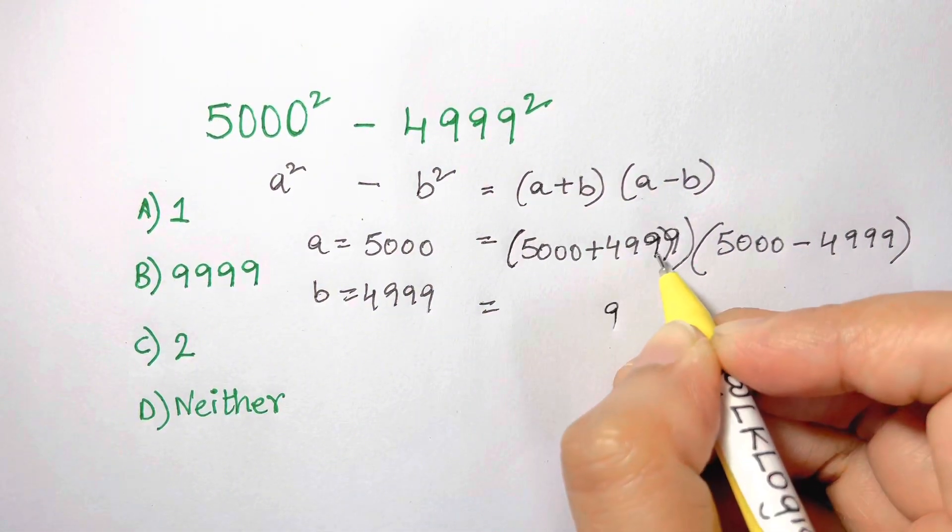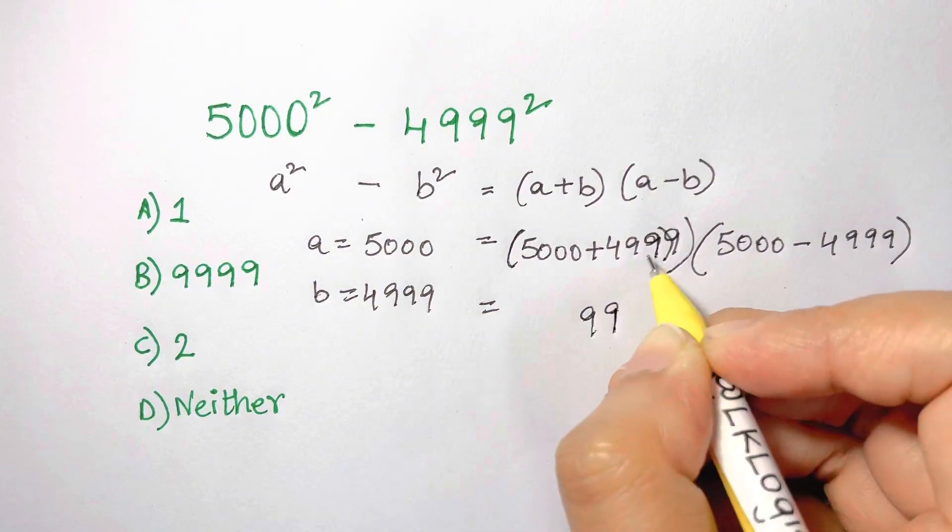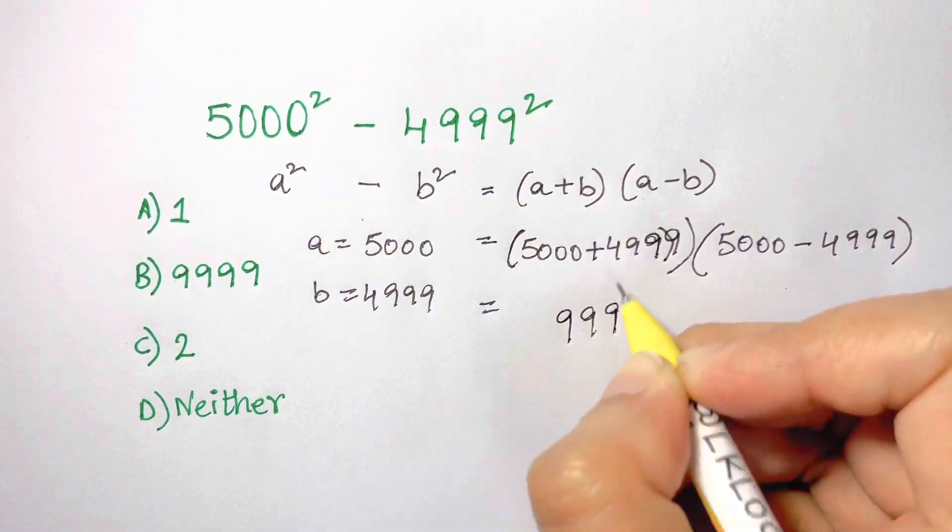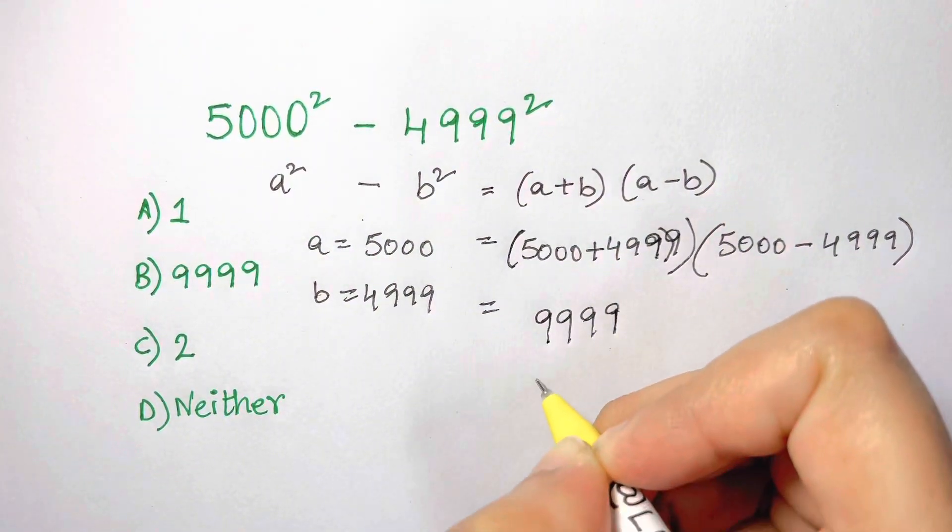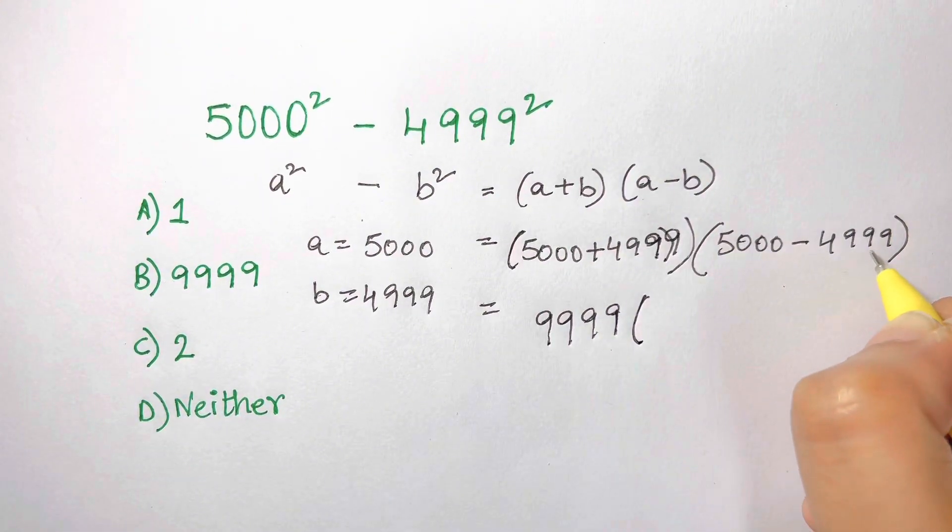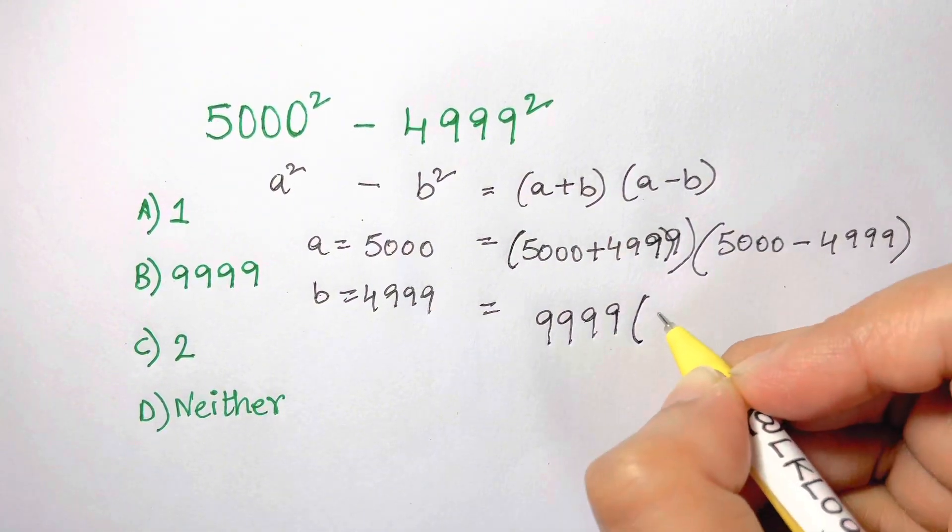Now when you add this, nine plus zero is nine, nine plus zero is nine, nine plus zero is nine, five plus four is nine. 5000 minus 4999 is just one.